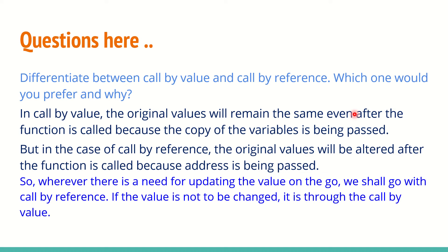Call by value will be used when you need to retain the original value safely but need to operate on it — you copy it into a different variable and operate on that copy. When you are okay to operate on and change the original value itself, you go with call by reference. Call by reference is with address; call by value is a copy.